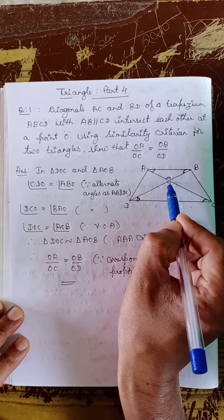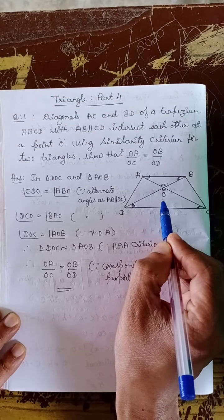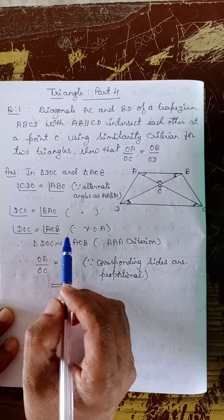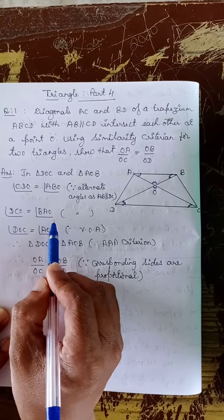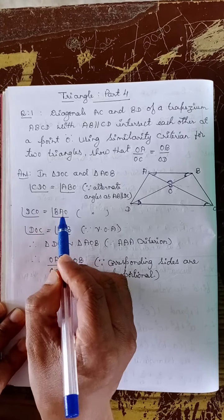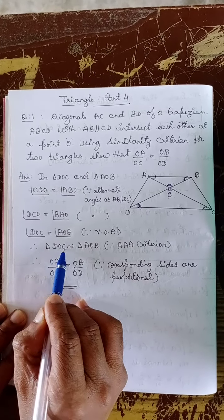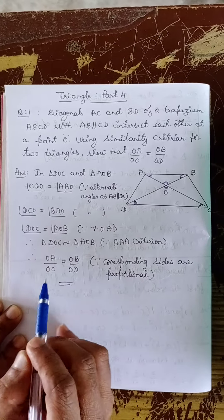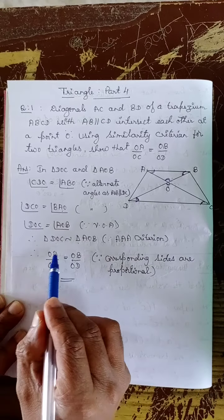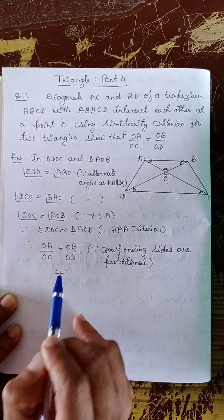Also, angle AOB is equal to angle DOC since they are vertically opposite angles. So, according to the angle-angle similarity criterion, we have proved three pairs of angles are equal. Therefore, triangles DOC and AOB are similar, and since their corresponding sides are proportional, OA by OC is equal to OB by OD.